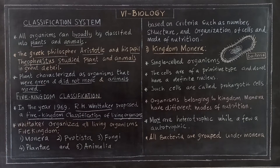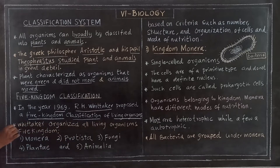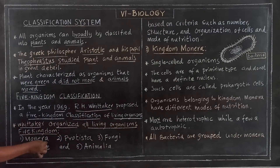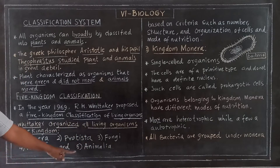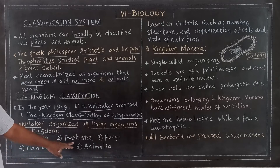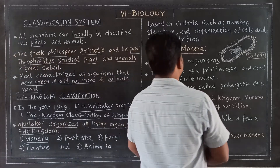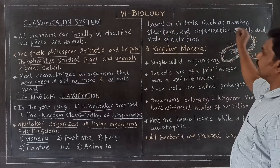Whittaker organized all living organisms into five kingdoms. The first one is Monera. Second is Protista. Third is Fungi. Fourth is Plantae and fifth is Animalia. These are classified based on criteria such as number, structure, organizational cells, and mode of nutrition.